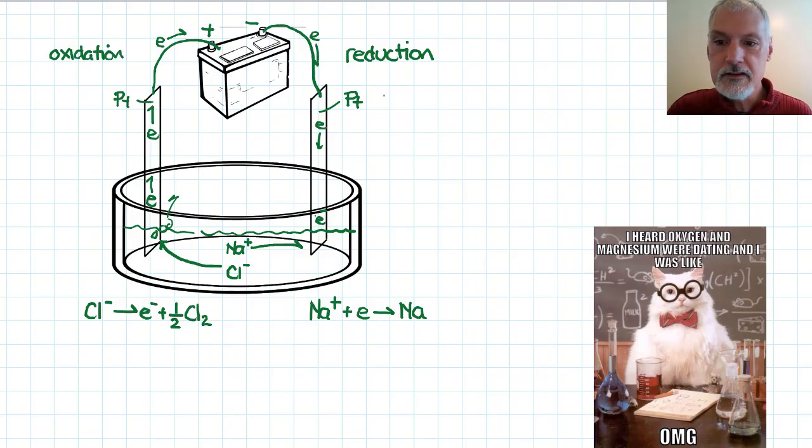We define the cathode as the site of reduction, just like we did in a voltaic cell. So this is still my cathode. The cathode is where reduction occurs. What is different, though, is the cathode here is the negative terminal. That's the difference with my voltaic cell. And over here, my anode becomes my positive terminal.